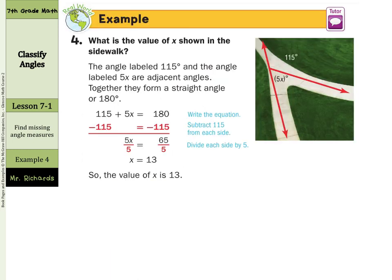What is the value of x shown in the sidewalk? The angle labeled 115° and the angle labeled 5x are adjacent and form a straight line — a straight angle of 180 degrees. So we say 115 + 5x = 180, then subtract 115 from both sides and divide by 5 to get x = 13.